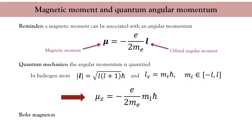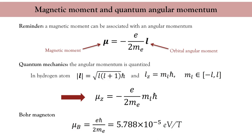The Bohr magneton is written μ_B = e·h-bar over 2m_e. This unit is very often used to quantify the magnetic moment of ions and solids, and we will use it widely in the remaining of this lecture.